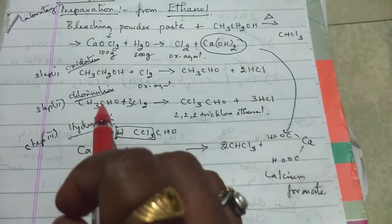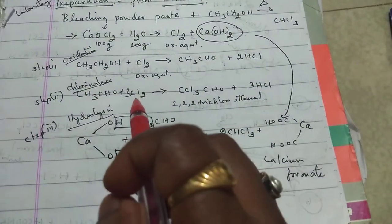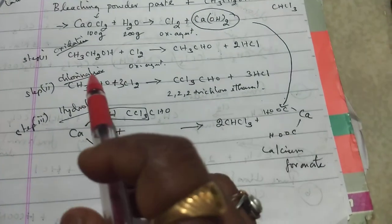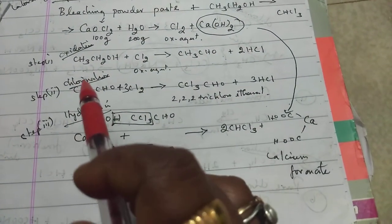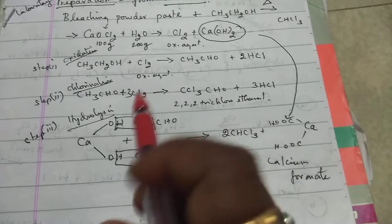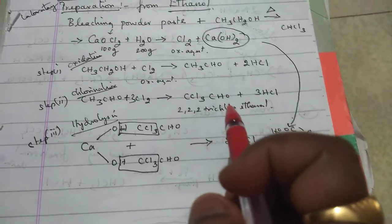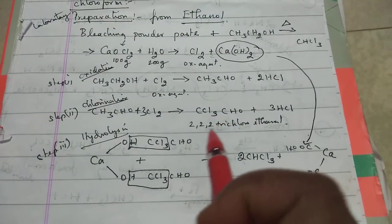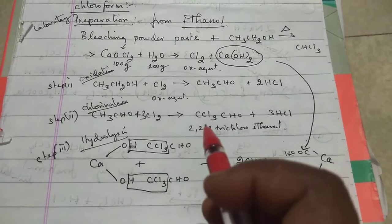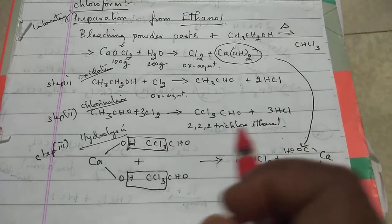In the second step, the aldehyde on chlorination leads to the three hydrogen atoms being replaced by chlorine, giving CCl3CHO, which is 2,2,2-trichloroethanol because of two carbon atoms ethanol.